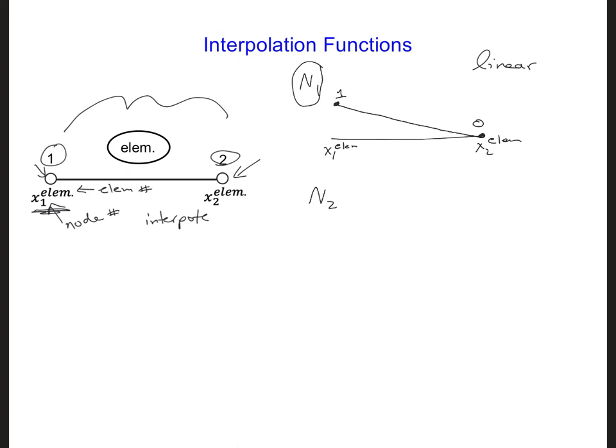So this is the interpolation function for N1. And for N2, which also goes from x1 of the element to x2 along the x-axis of the element, this will have a value of 1 at node 2 and a value of 0 at node 1.